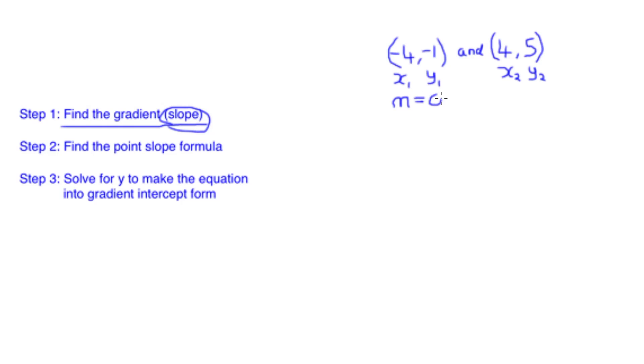So we have our x1 is -4, y1 is -1, our x2 is 4, and our y2 is 5. We also know that our m equals 0.75. Let's continue to step two: finding the point slope formula. The point slope formula is as follows: y minus y1 equals m, open bracket, x minus x1, and close our bracket there.